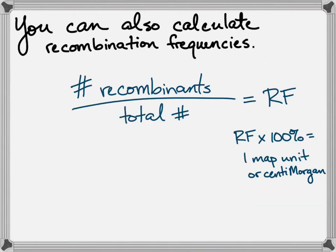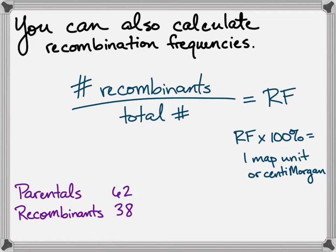You can use the same numbers to calculate recombination frequencies. Looking at our parental and recombinant numbers from the example before, this is our formula for recombination frequency. It's just number of recombinants divided by the total. And if you multiply that by 100%, you get what are called map units, which were actually used to map genes to a chromosome before we had DNA sequencing and could physically locate the gene on a chromosome. Pretty cool that they did this all with math. In this case, we would have 38 divided by 100 or 38 map units.